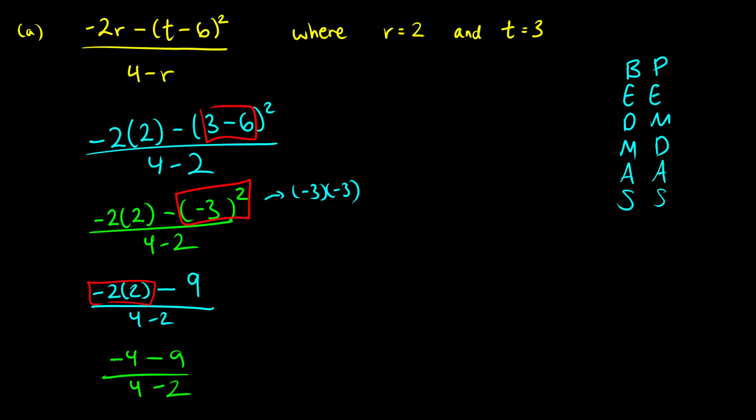At this point, we just have some subtraction to do on the top and bottom. So on the top, we have negative 4 minus 9. That gives us negative 13 on top. And on the bottom, we have 4 minus 2, which gives us 2 on the bottom. And we end up with a fraction negative 13 over 2.